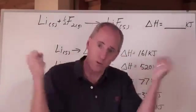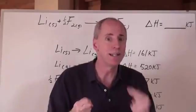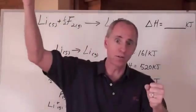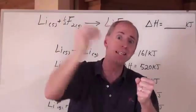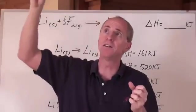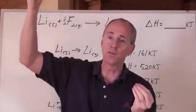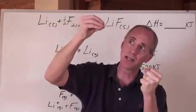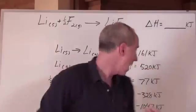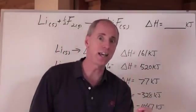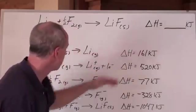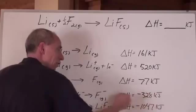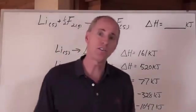So far all we've got is energy required, required, required. But now, as the fluorine gains an electron coming in from outside the atom, energy is released because there's a force of attraction between the electron and the nucleus of the fluorine atom. As the electron comes in, energy is released — that's called the electron affinity energy. So we have sublimation energy, ionization energy, dissociation energy, and electron affinity energy.